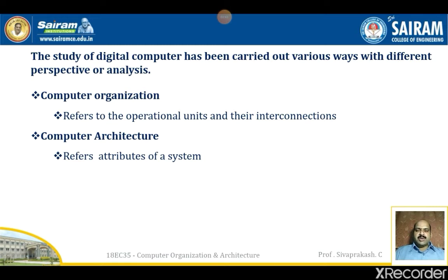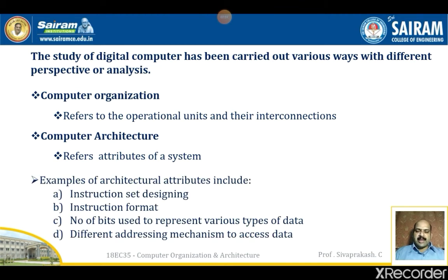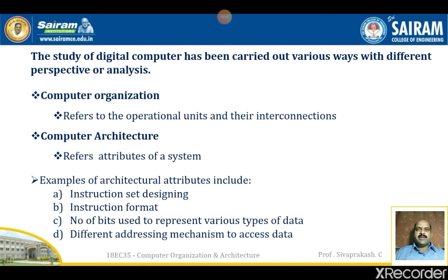Let us see about the second one, computer architecture. It mostly refers to the attributes of a system visible to a programmer, or those attributes that have a direct impact on the logical execution of a program. Examples include instruction set design, instruction formats, number of bits used to represent various types of data, and different addressing mechanisms to access those data. This is the difference between organization and architecture: computer organization refers to operational units and interconnections, whereas architecture deals with the attributes of the system.